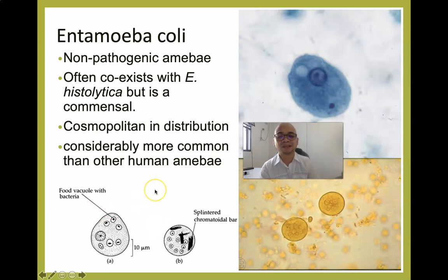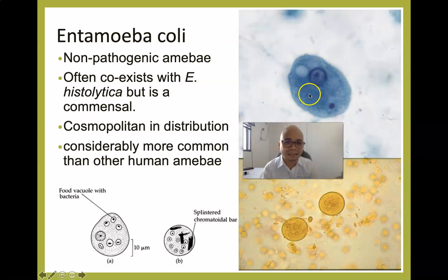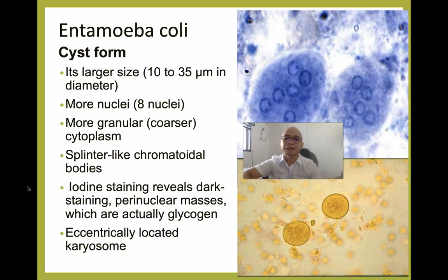Key features to differentiate Entamoeba coli from Entamoeba histolytica: in the cyst, the chromatoidal bar is splintered; in the trophozoite, you can see ingested bacteria rather than ingested RBCs. Recall that E. histolytica is hematophagous, so its cytoplasm contains ingested RBCs, making it appear dirty. In E. coli, ingested bacteria are found instead.